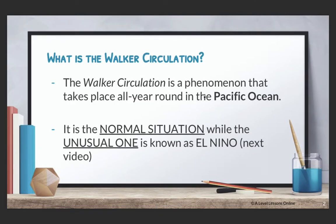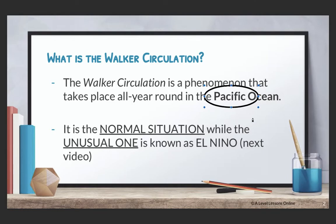So basically the Walker Circulation is a phenomenon that actually takes place all year round in the Pacific Ocean. Take note that we're looking at the Pacific Ocean — for those of you who do not know, the Pacific Ocean is basically the one between Australia and South America, like Chile and Peru. Your Walker Circulation is actually the normal situation, while the unusual one is actually your El Niño. Walker Circulation is what usually happens — it is the normal situation.